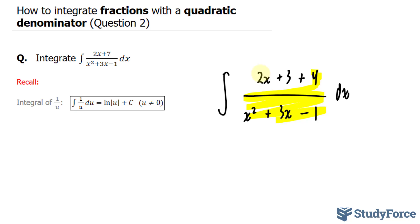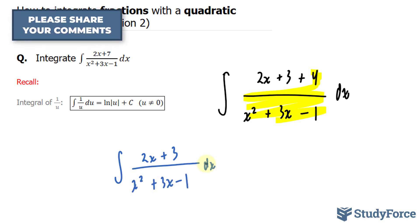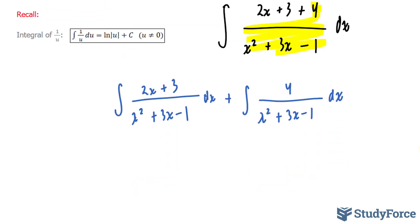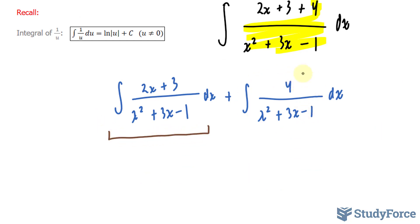But we don't know the integral of 2x plus 3 over x to the power of 2, so on. So what I'll do is rewrite this so that it looks like this: 2x plus 3 over x squared plus 3x minus 1 dx plus the integral of 4 over x squared plus 3x minus 1 dx. I'll only focus on this side for now because I already know the answer to this. We'll reveal that later.